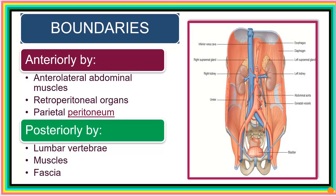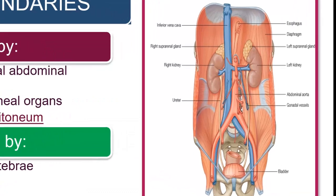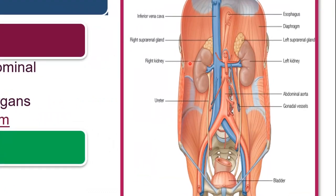We'll start with the anterior boundary. The anterior boundary is marked by the anterolateral abdominal muscles, and we'll also notice some retroperitoneal organs marking this boundary. We also see the layers of the peritoneum.